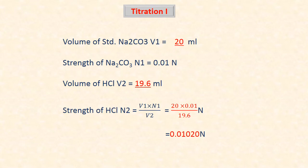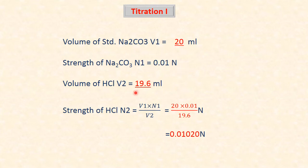Calculation — titration one: volume of standard sodium carbonate V1 = 20 ml; strength of sodium carbonate N1 = 0.01 N (given). Volume of HCl V2 = 19.6 ml (titrated value). Strength of HCl: N2 = V1·N1 / V2 = 0.01020 N.